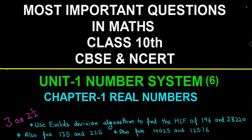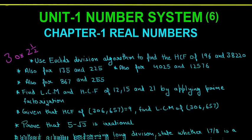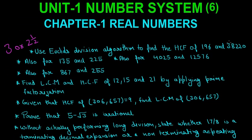Unit 1 is Number System. The weightage of this unit is 6 marks and its first chapter is Real Numbers. These are all the 2.5 to 3 mark questions which were coming again and again in those exams. These are really important, so note down these questions.